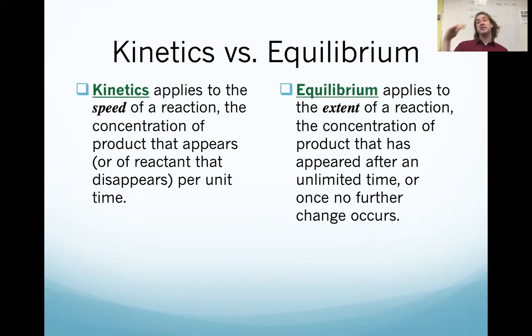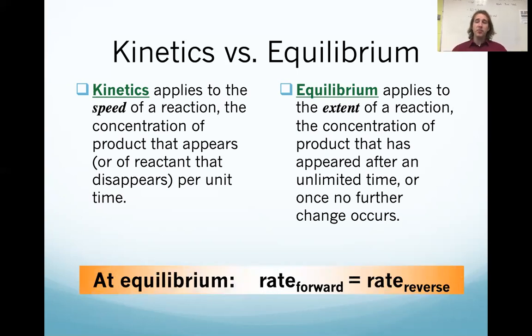Essentially what's happening is as reactants make products, our products are reacting back into those reactants at equal and opposite rates. We say that at equilibrium, your rate forward, the rate at which your reactants are changing into products, is equal to the reverse rate or the rate at which the products are changing back into the reactants.